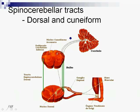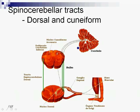Finally, we will speak about the dorsal and cuneiform spinocerebellar tracts. They both bring information from muscle spindles and Golgi tendon organs. The difference is that the dorsal spinocerebellar tract brings information mainly from lower limbs and the lower part of the trunk, whilst the cuneiform spinocerebellar tract brings information from upper limbs and upper part of the trunk. The first neurons of the dorsal spinocerebellar tract synapse to the second neurons, and these don't cross sides — there is no decussation. They ascend on the homolateral side in the dorsal spinocerebellar tract and introduce themselves via the inferior cerebellar peduncle.